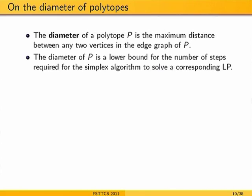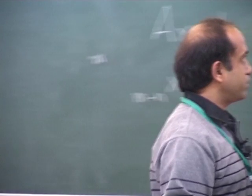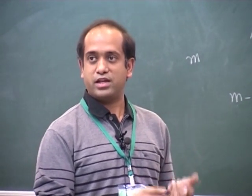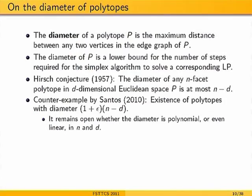A note about the diameter of the polytope: the diameter is the maximum distance between two vertices. No matter what algorithm is used, the diameter is a lower bound on the number of steps. There is the famous Hirsch conjecture, which says the diameter of any n-facet polytope in d dimensions is at most n minus d. Very recently, a counterexample was given to this bound by Santos — the diameter can be slightly above n minus d — but it is still possible the diameter is polynomial in n and d.